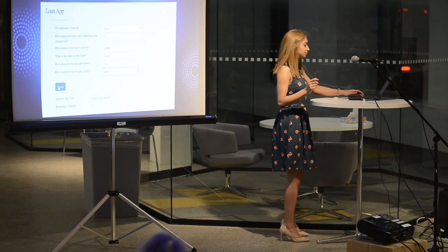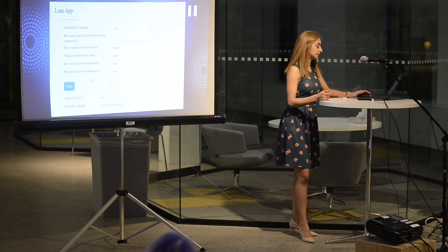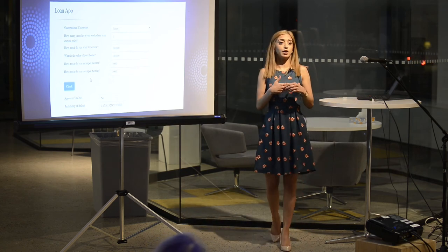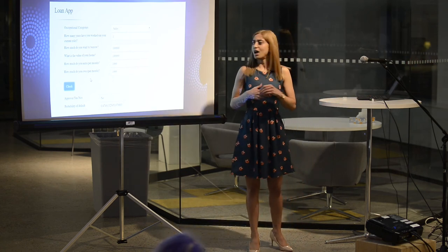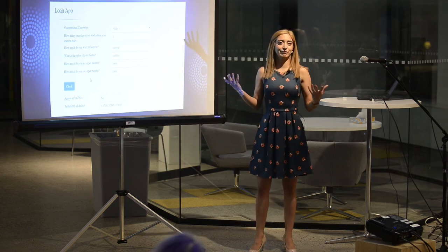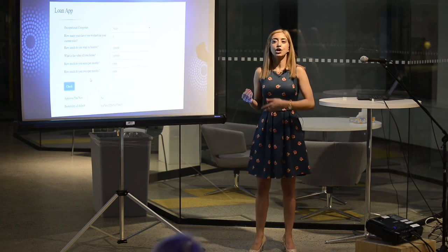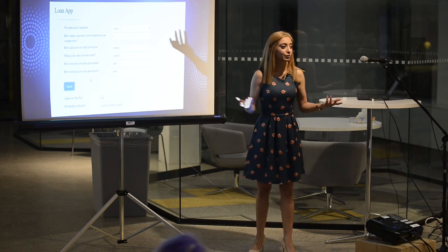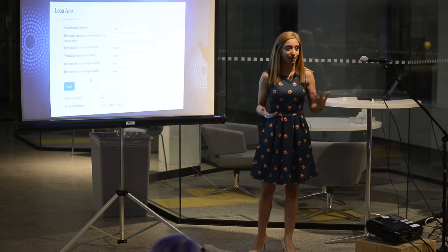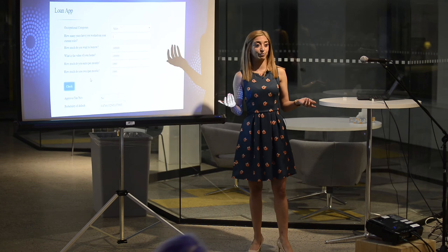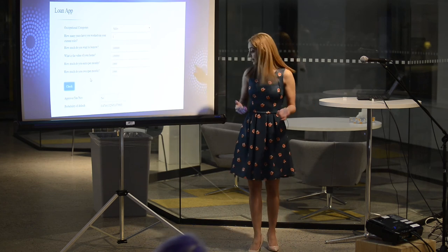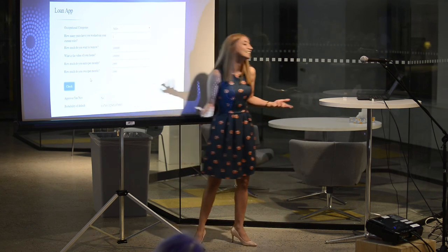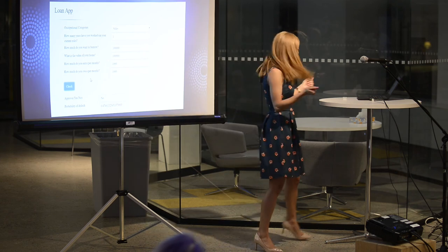It goes through and says probability of default is 0.4 — do not approve them. An app like this could be in front of a call center agent, or a bank might put it on their website so customers can see if they get pre-approved. In that case, of course, we probably wouldn't show them their own probability of default — we'd just say 'sorry, you were not approved.'